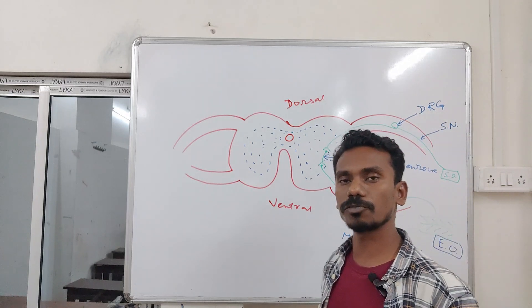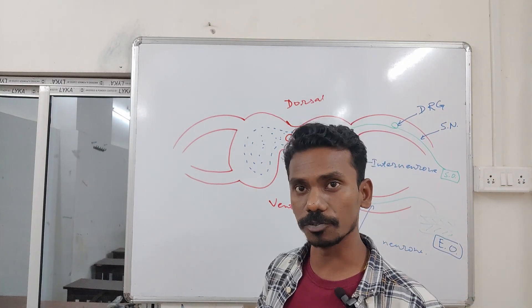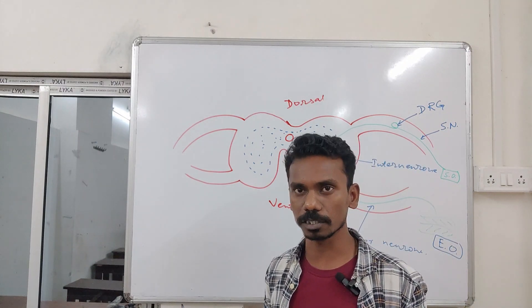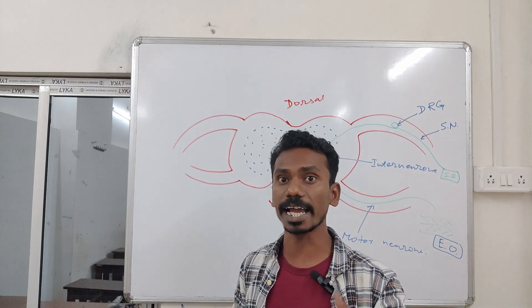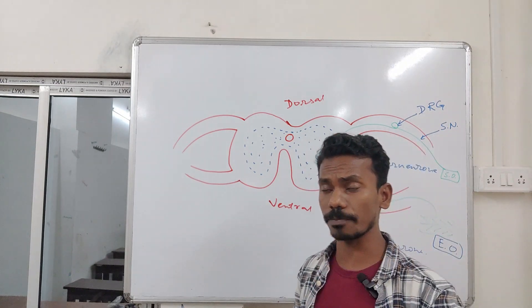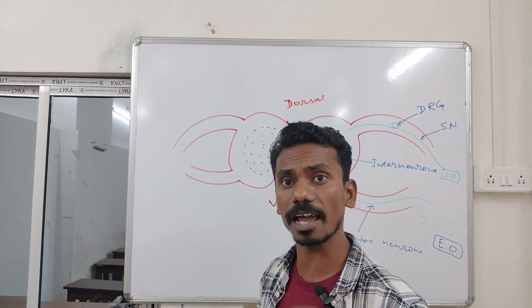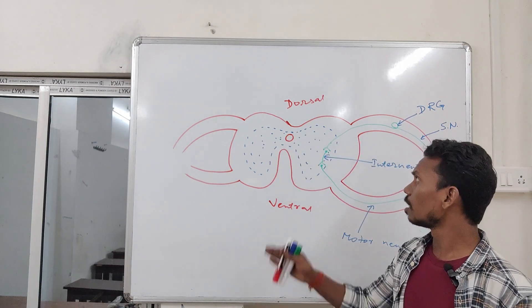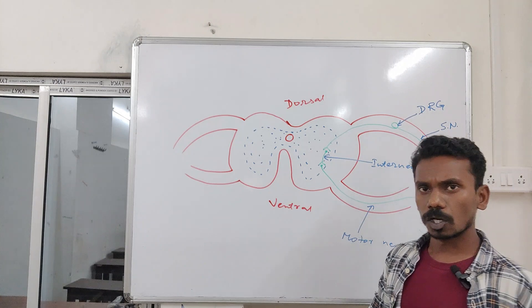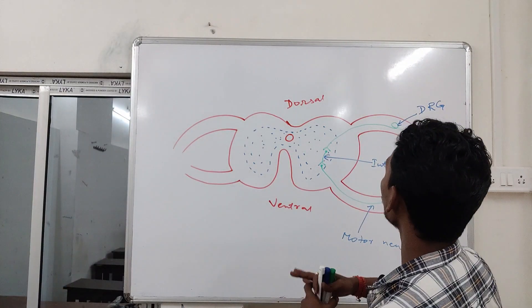White matter contains myelinated neurons. The neurons present in the white matter are myelinated and longer in size, whereas in gray matter, the neurons are shorter in length and non-myelinated. These neurons in the gray matter play the role of interneurons.